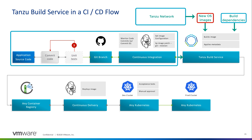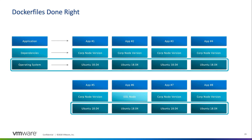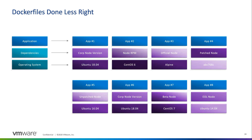This ensures that if there is a vulnerability in one of these layers, a new container will be created automatically as soon as a patch is available. Let's take a look at a hypothetical example of patching an operating system vulnerability using Dockerfiles versus KPACK and Tanzu Build Service. Maybe your organization is standardized across all development teams to use a standard run image, or maybe teams are using different versions or even different distributions for container-based images.